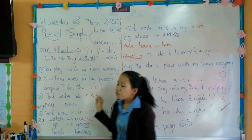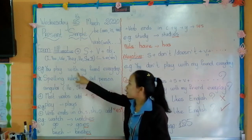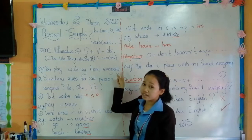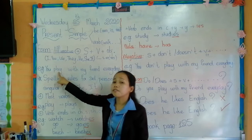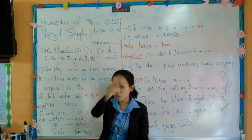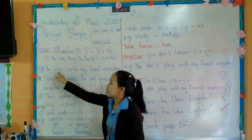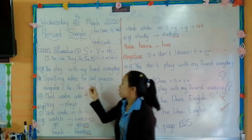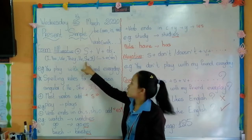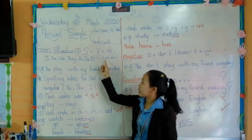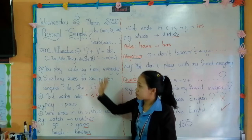For example, to make the sentence, you can say: you play with my friend every day. So when you use subject I, you, we, and they with the verb play, no need to add S, ES, or change Y to IES. You just add the verb play with nothing. But if you use with he, she, or it, you have to add S, ES, or change Y to IES. It depends on the verb.